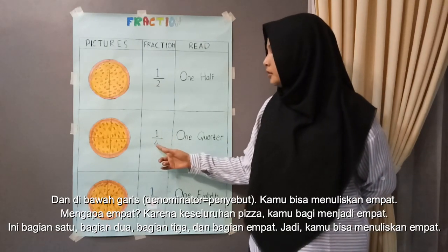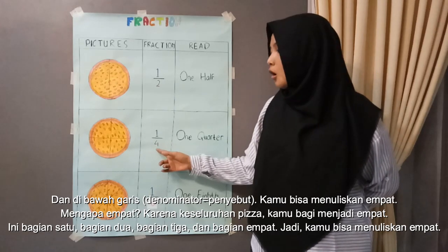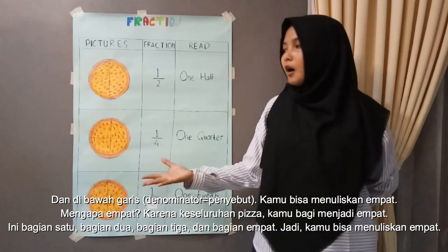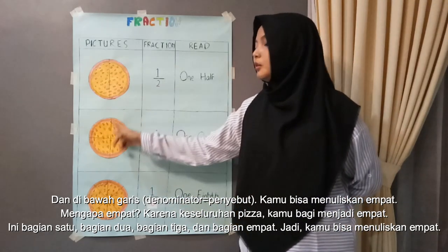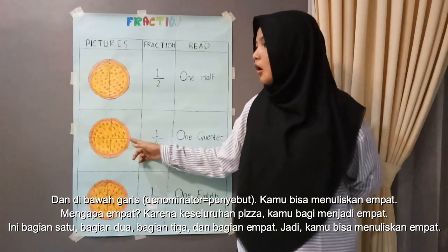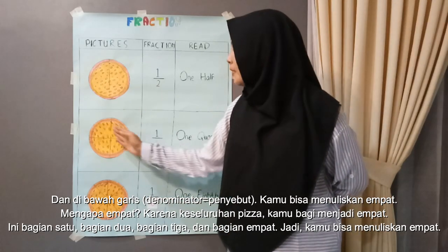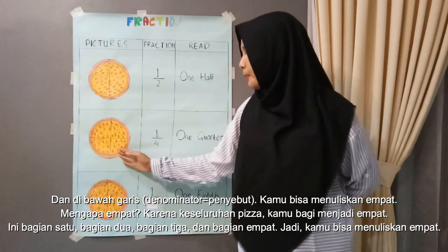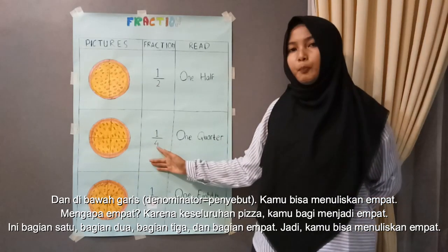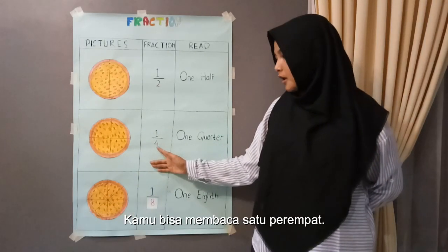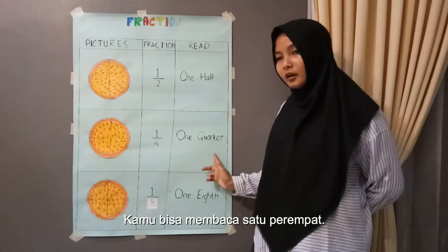And then in the underline, you can write four. Why four? Because one whole pizza, you divide into four. So this is part one, part two, part three, and part four. So you can write four. And then you can write one quarter.